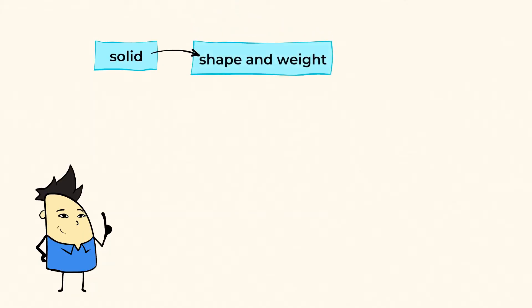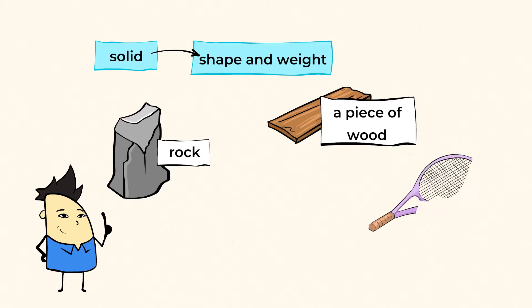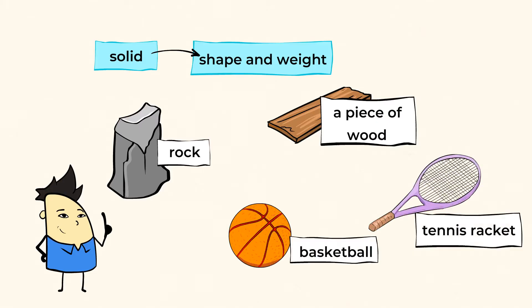Let's take a closer look. Solids are probably the most obvious kind of matter. They have a shape and weight. Can you think of an example of something that's solid? Rocks, a piece of wood, your tennis racket, your basketball?